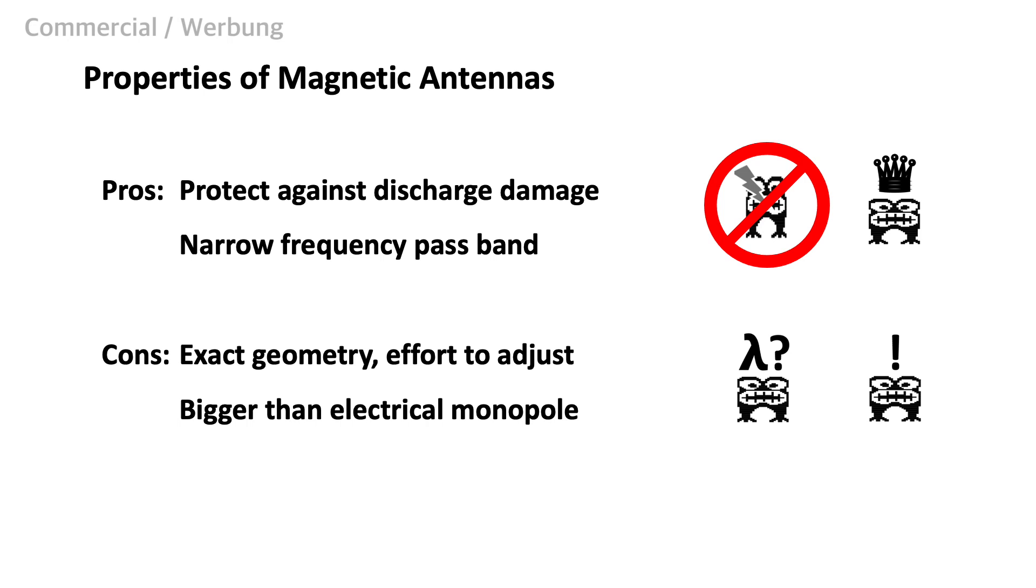Magnetic antennas are practically a short for direct current and low frequencies. They tend to have only a narrow frequency passband around their resonance frequency. These properties help to protect the receiver front end from electrostatic discharge, and with the narrow frequency passband they filter out unwanted signals or noise. This might help LoRa receivers to improve the selectivity a bit.